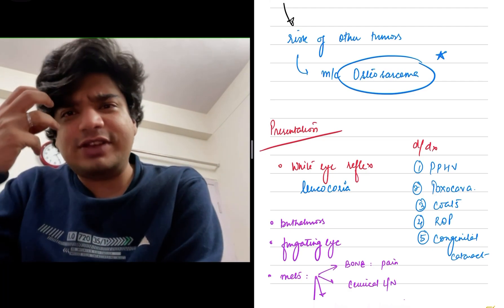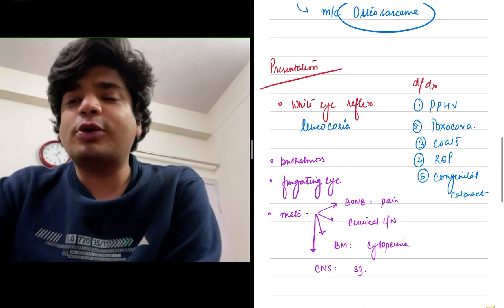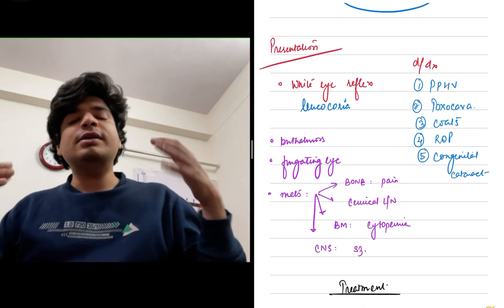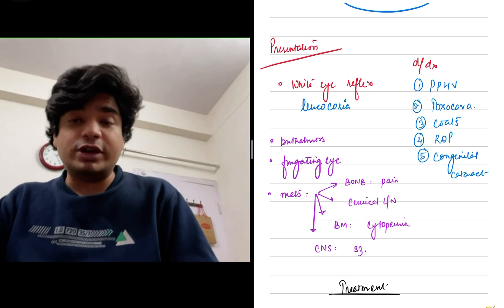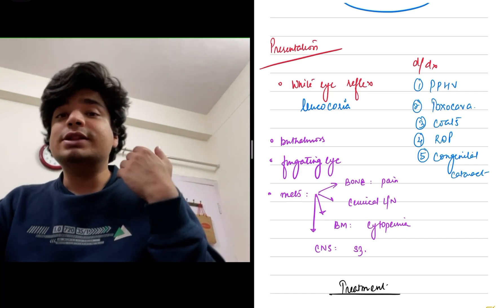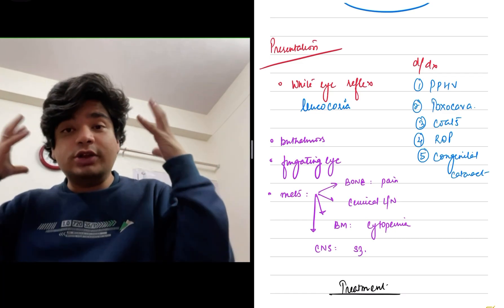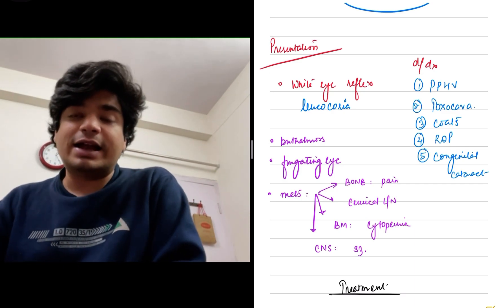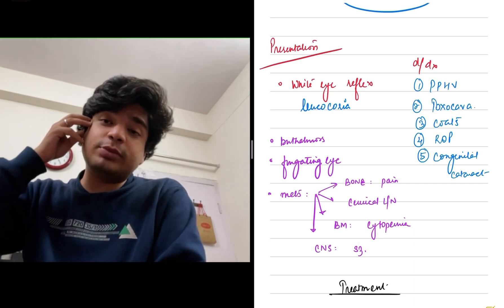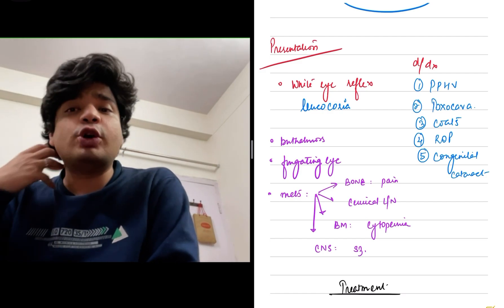Sometimes the eye will fungate—if the tumor grows, it will fungate out and cause buphthalmos. Sometimes if metastases are there, the presentation of mets can also be there. If mets have occurred to the bone, there will be bony pain. If mets have occurred in bone marrow, there will be bone marrow failure, anemia, and thrombocytopenia. If it has penetrated into the CNS, seizures and raised ICT can occur. For lymph node spread, it goes to pre-auricular and cervical, so there can be cervical and pre-auricular lymphadenopathy.